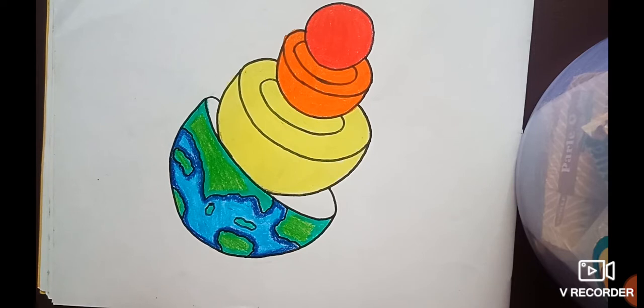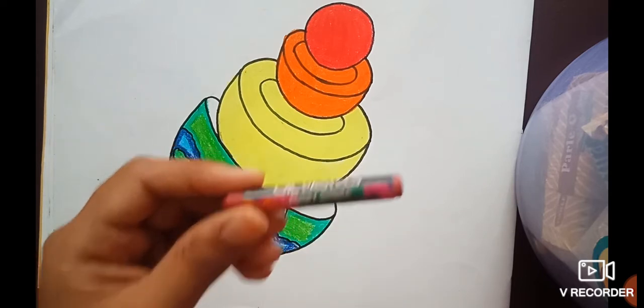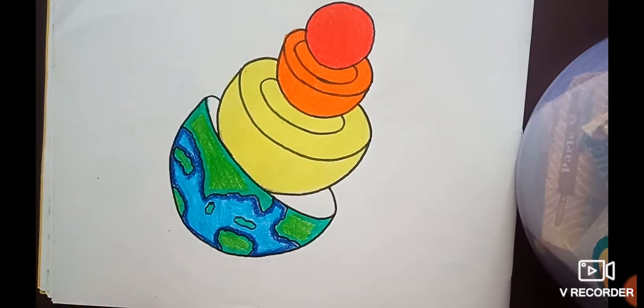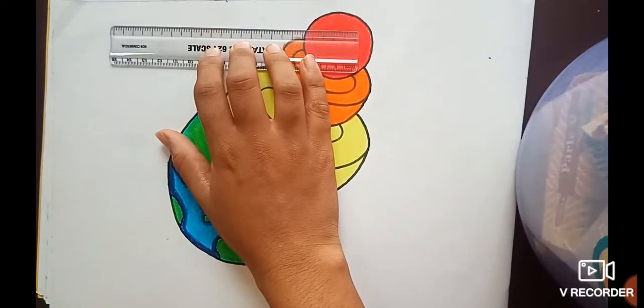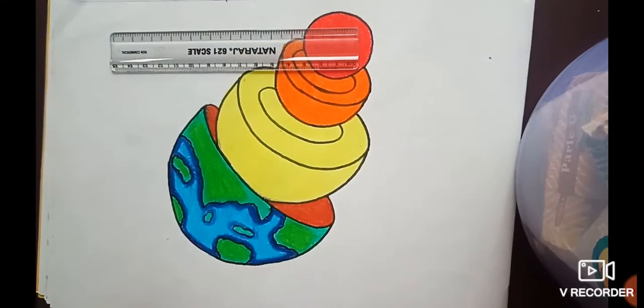So first one is the core, then it's going to be outer core, then it's mantle and crust. So fill up the remaining part of crust with brown or burnt sienna, whatever name it is. And that's our drawing, so time for naming it.